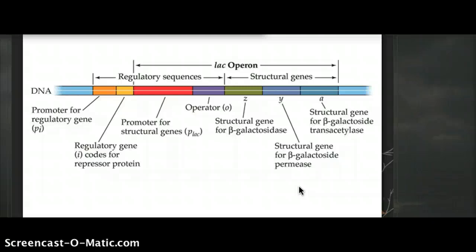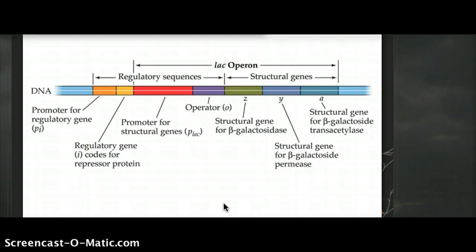When lactose is present, the E. coli tries to be more efficient — it turns on those genes. The repressor does not bind to the operator, and those enzymes are produced. The repressor is essentially an inhibitor. This is simply a more efficient way of making enzymes: why produce all those enzymes when there is no lactose? That's the core logic — enzymes are made only when necessary.